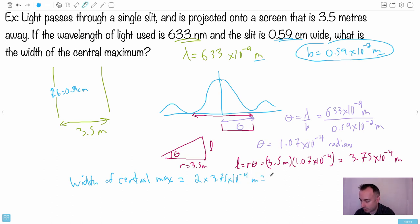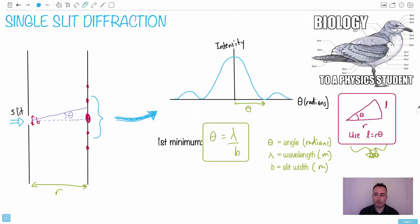I end up with an answer of 7. Now let's see how many decimals I can use. I can only use two significant figures, so I'll say 7.5 times 10 to the minus 4 meters, which is very small. It should make sense, this is 7.5 times 10 to the minus 4 meters, or you could say it's 0.7 millimeters. There's a lot of ways of determining it, but there you go. This is how you can use this single slit diffraction equation to solve a real-life question.